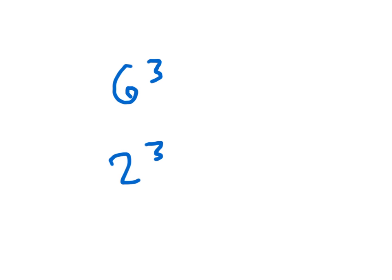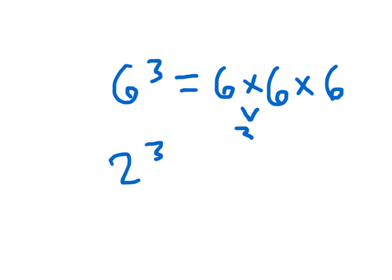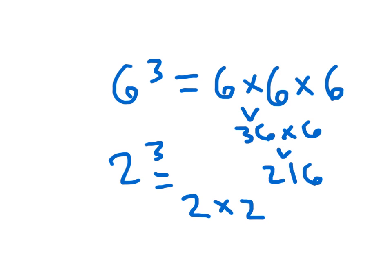Now for the other two: 6 cubed and 2 cubed. For 6 cubed, don't make that common mistake — don't go 6 times 3. That's 6 times 6 times 6. 6 times 6 is 36, times 6 again: 30 times 6 is 180, plus 6 times 6 which is 36, giving us 216. For 2 cubed — 2 times 2 times 2, which equals 8. Correct.